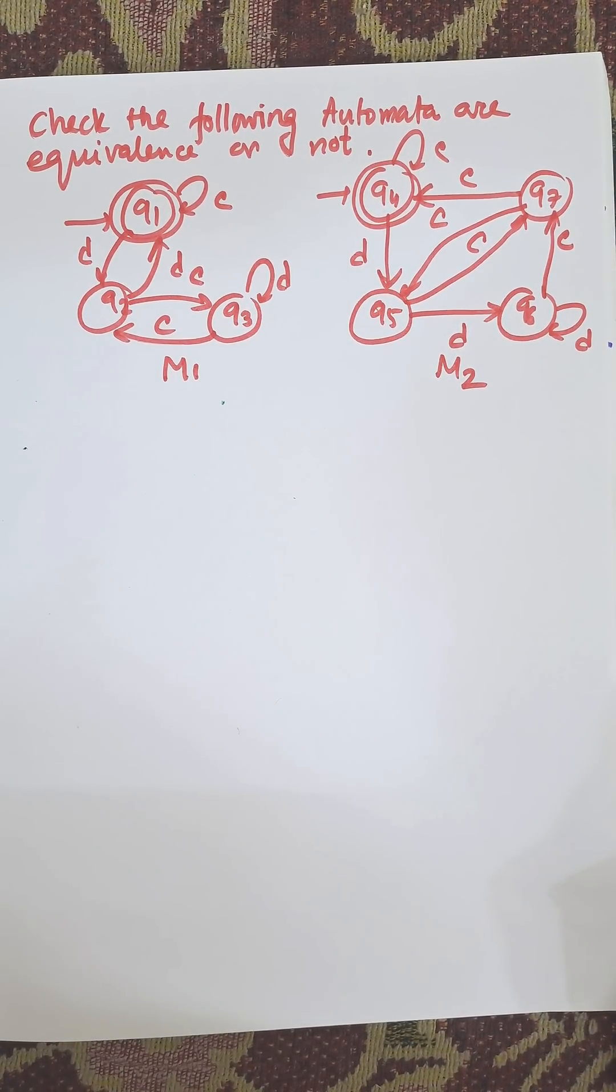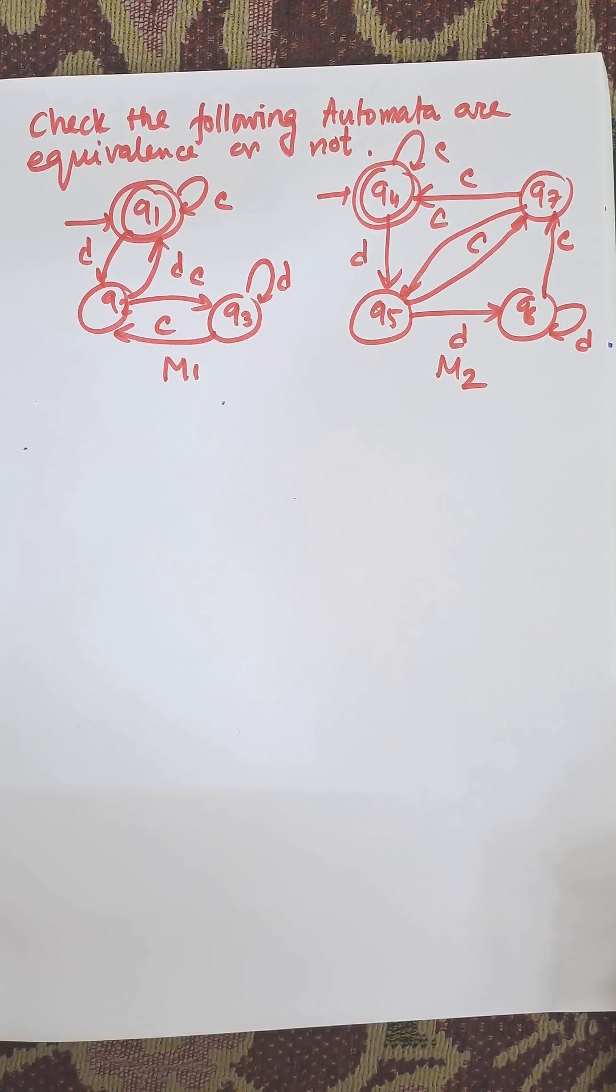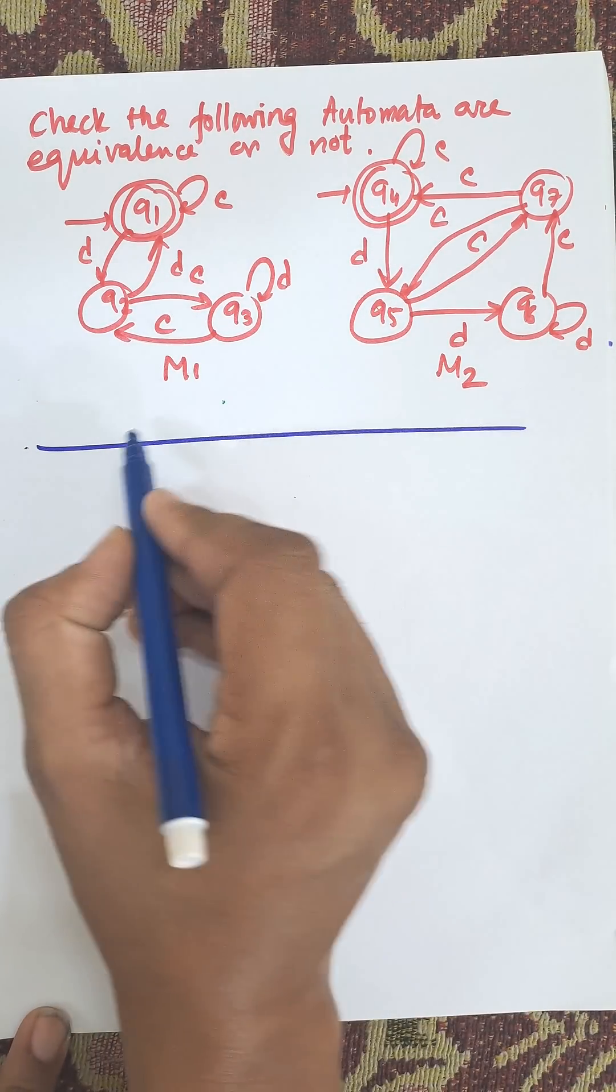Hi everybody, in this video I am going to check whether the given automata are equivalent or not. Equivalent means they are the same automata or not. First of all, we need to create the table.